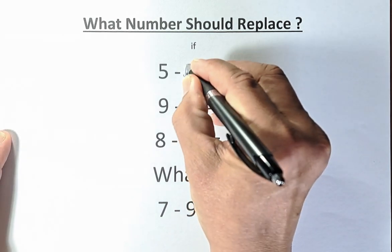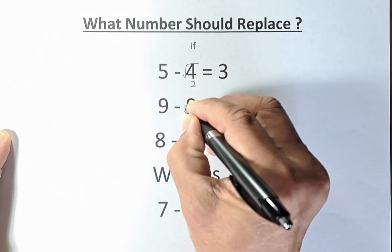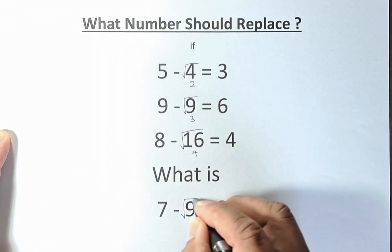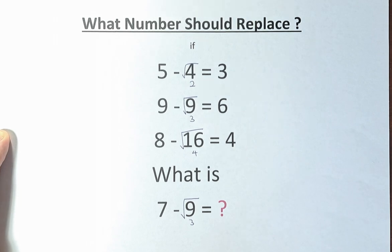Square root of 4 is 2, square root of 9 is 3, square root of 16 is 4, and square root of 9 is 3. So now you can see the pattern.